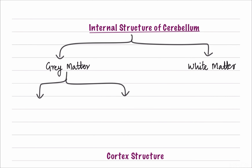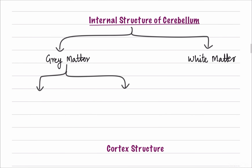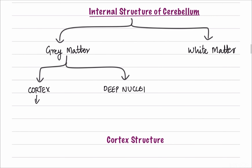Now we move into the internal structure of cerebellum. Just like the cerebrum, cerebellum is composed of both gray matter and white matter. In the cerebrum there is an outer cortex of gray matter and inner white matter. In the cerebellum, gray matter is present as the cerebellar cortex on the outside, but there are also parts of gray matter within the white matter called deep nuclei. The cortex is arranged into three layers with five cell types, and there are four deep nuclei.